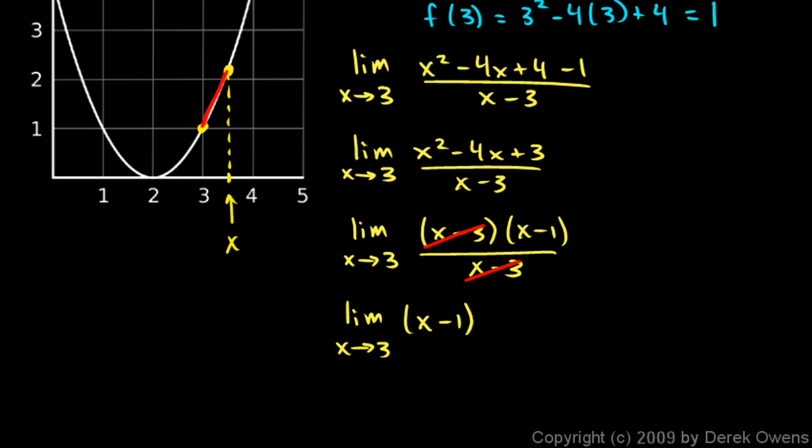And this is easy. You can just tell at a glance that as x gets really close to 3, that x minus 1 has to get really close to 2. And that's our answer. That is the slope of the graph right there at that point. At x equals 3, the graph has a slope of exactly 2.